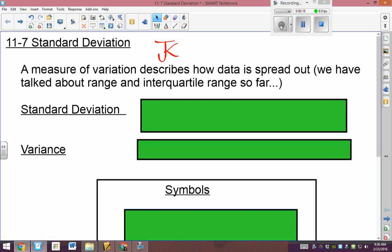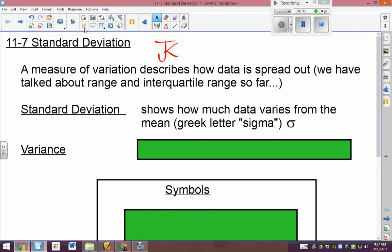A measure of variation describes how the data is spread out. We've talked about two of those already when we did box and whisker plots - range and interquartile range. This is another kind, and in fact, it's probably more commonly used. This is a very common one in everyday businesses, statistics, probability classes, all sorts of stuff.